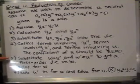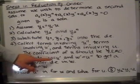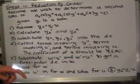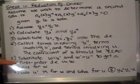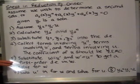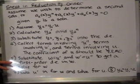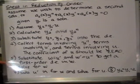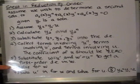Once the u term drops out, make the substitution w equals u prime and w prime equals u double prime. You will end up with a first-order differential equation in w, which will either be separable or first-order linear, so you can solve it for the function w.